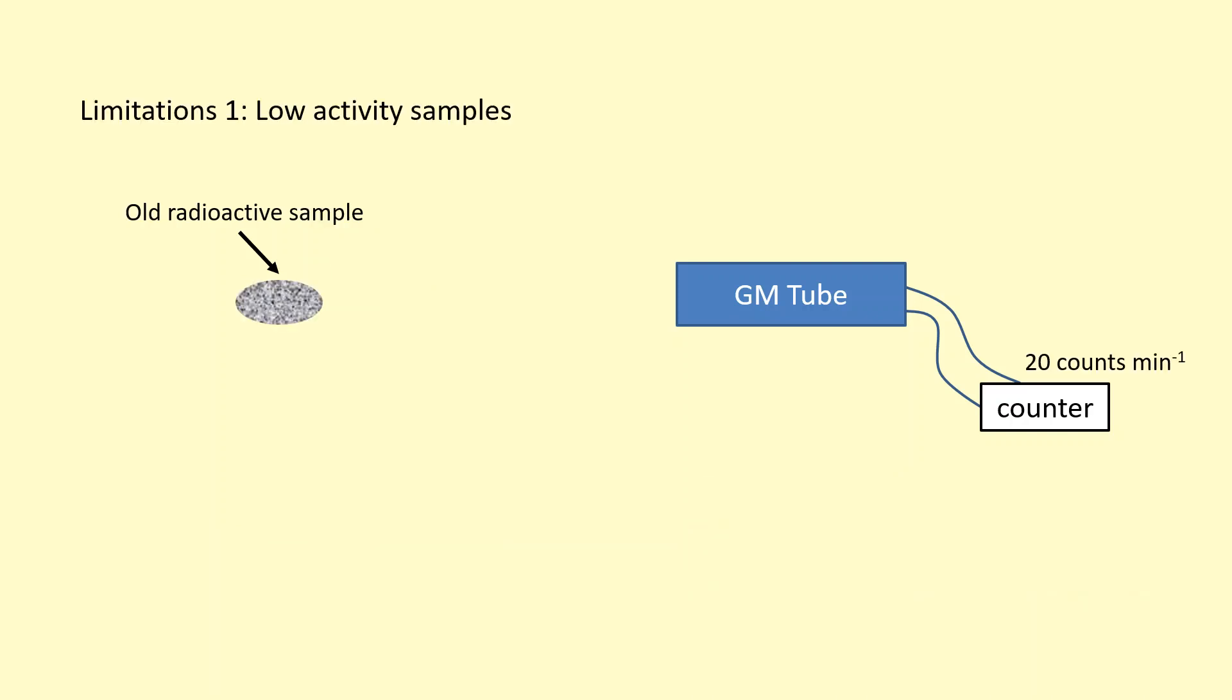One of the limitations with measuring radioactivity is if the sample has a very low activity, meaning that it does not emit too much radiation to begin with. So this old rock here is getting a count rate of 20 counts per minute, but that's the uncorrected count rate. So let's say I subtract the background radiation around 18 and I get a count rate of 2 counts per minute.